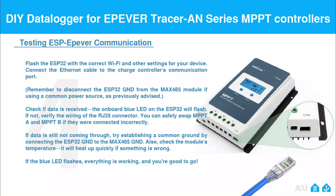Testing ESP32-Epiver communication: flash the ESP32 with the correct Wi-Fi and other settings for your device. Connect the Ethernet cable to the charge controller's communication port. Remember to disconnect the ESP32 GND from the MAX485 module if using a common power source, as previously advised. Check if data is received — the onboard blue LED on the ESP32 will flash. If not, verify the wiring of the RJ45 connector. You can safely swap MPPTA and MPPTB if they were connected incorrectly. If data is still not coming through, try establishing a common ground by connecting the ESP32 GND to the MAX485 GND. Also check the module's temperature, as it will heat up quickly if something is wrong.